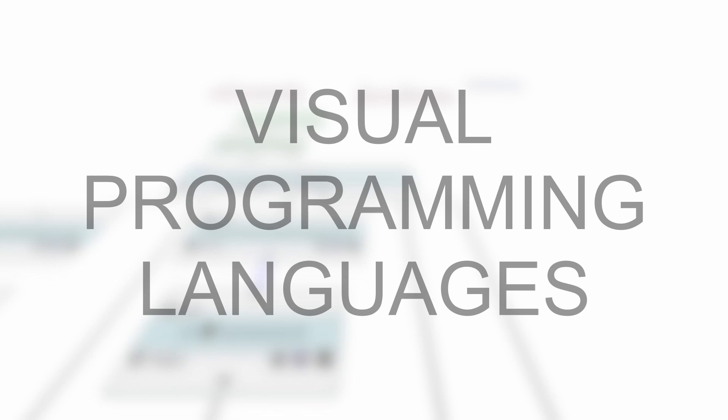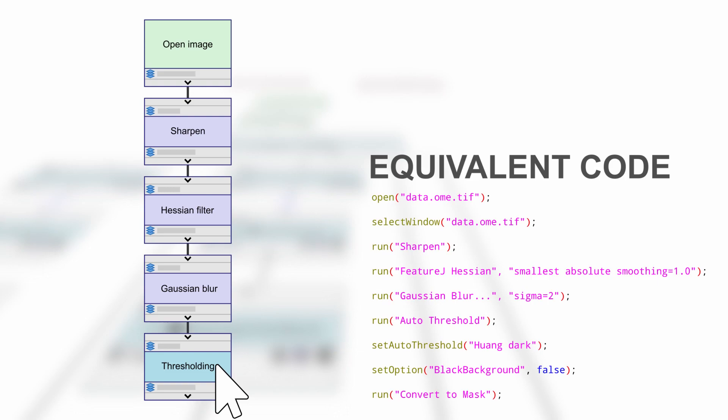An alternative to this processing are visual programming languages. These allow anyone to just design a flowchart of the processing steps, whereas the language itself will take care of all the technical details.